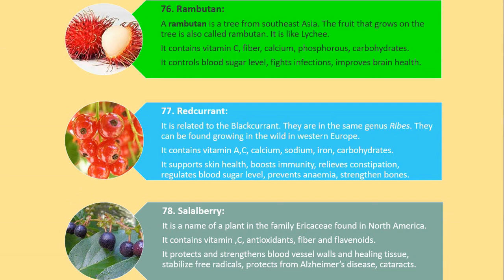Number 76. Rambutan. A rambutan is a tree from Southeast Asia. The fruit that grows on the tree is also called rambutan. It is like lychee. It contains vitamin C, fiber, calcium, phosphorus and carbohydrates. It controls blood sugar level, fights infections, and improves brain health.